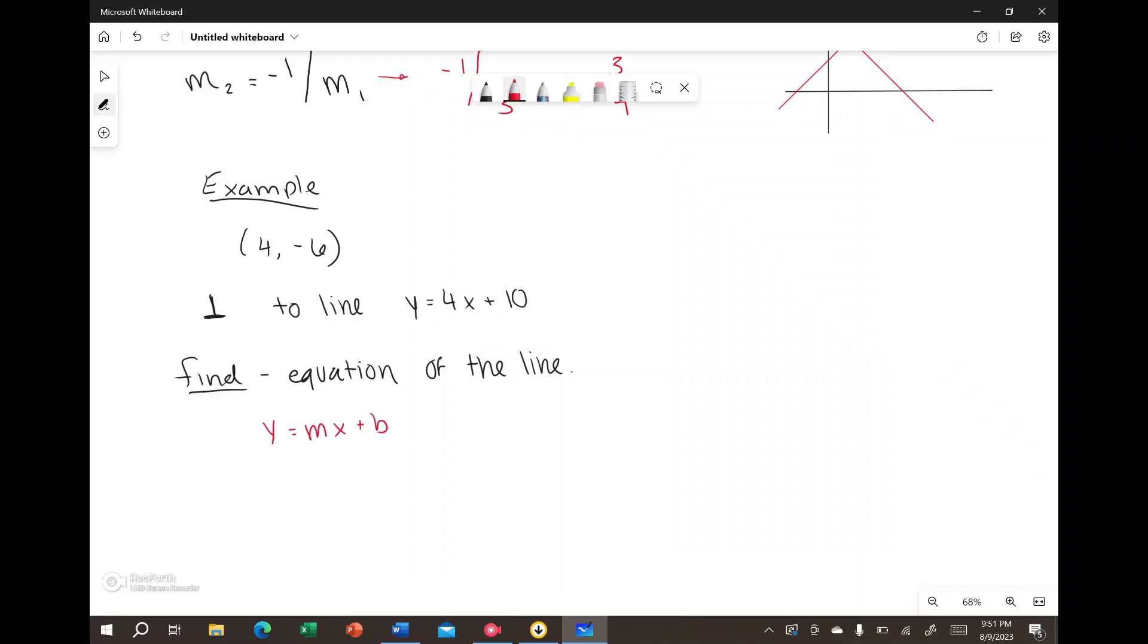So we know what this first slope is from the standard slope equation y equals mx plus b. And if I write this over the equation that we're given, y equals 4x plus 10, you can see how the variables are assigned. So the first slope is 4.